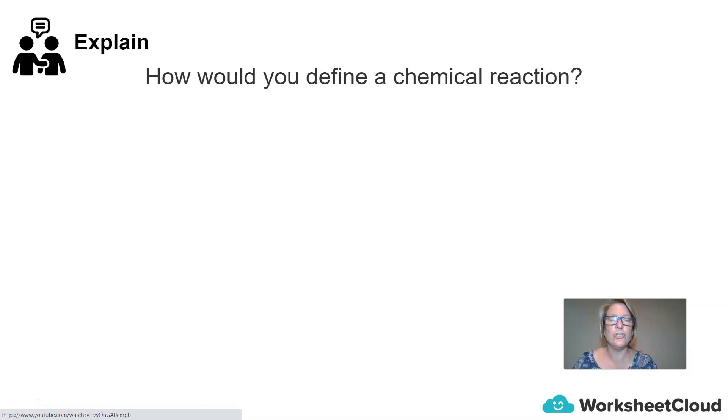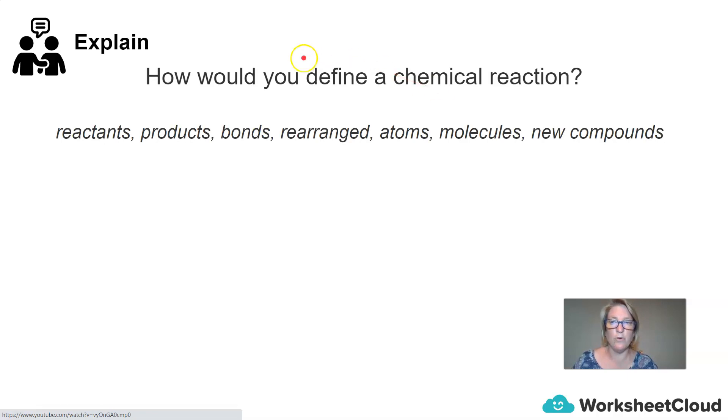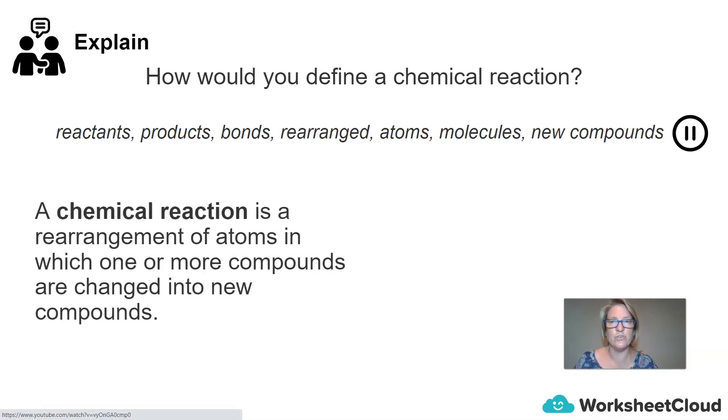So how would you define a chemical reaction? You can use these keywords to help you: reactants, products, bonds, rearranged, atoms, molecules, and new compounds. So if you'd like to pause the video now and use these keywords to help you come up with a definition you can. So here is a definition that you can use: a chemical reaction is a rearrangement of atoms in which one or more compounds or elements are changed into new compounds.